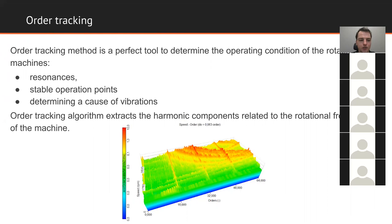With order extraction, we can see specific harmonic components that relate to certain machine faults. The first harmonic usually relates to unbalance of the machine; the second harmonic often relates to eccentricity. For example, if we have a nine-rotor-blade machine, the ninth harmonic relates to errors on the blades. If we have 31 teeth on a gear, the 31st harmonic will show the gear mesh frequency.